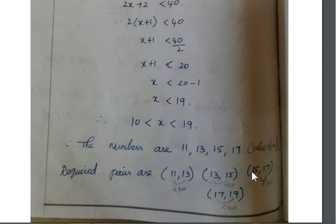For values of x, the pairs are 11 and 13, 13 and 15, 15 and 17. When we take 17, the next number is x plus 2, which gives us 19. The range of x is between 10 to 19, so we take 11 to 17, but the second number is x plus 2. These are the required pairs: (11, 13), (13, 15), (15, 17), (17, 19).